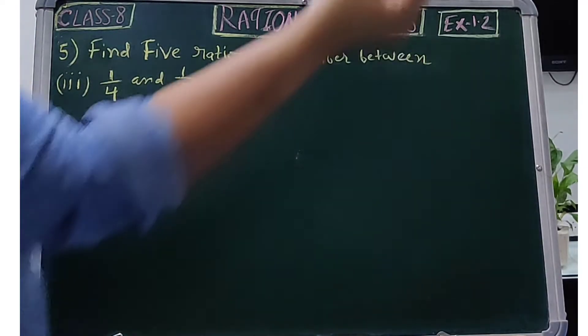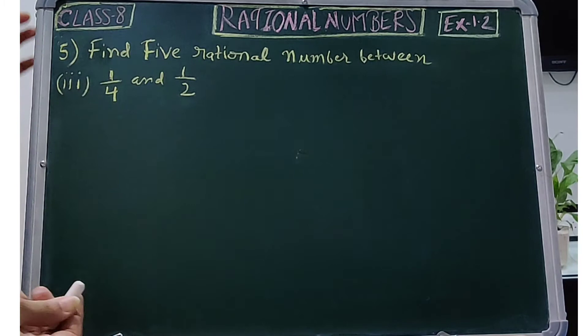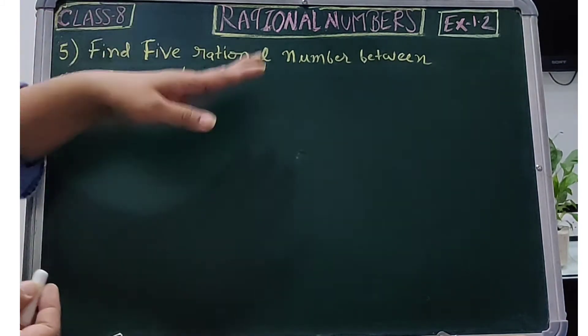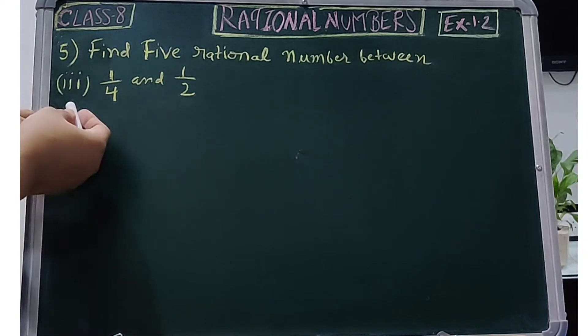Hello everyone, today we will discuss exercise 1.2 of class 8, question number 5. According to this question, we need to find 5 rational numbers between - we will now discuss the third part.